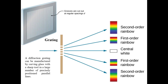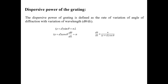We can find the dispersive power of grating. The dispersive power of grating is defined as the rate of variation of angle of diffraction with variation of wavelength, and it is given by dθ/dλ. To find dθ/dλ, we differentiate the condition for principal maxima. The differential gives (e + d) cos θ dθ = n dλ, so dθ/dλ = n / [(e + d) cos θ].